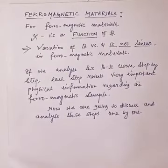Now in ferromagnetic materials chi is a function of H. This is unlike dia- and paramagnetic materials because if you can remember in dia- and paramagnetic materials chi was a constant so that in the M versus H variation we get a straight line.